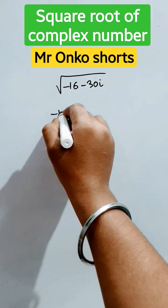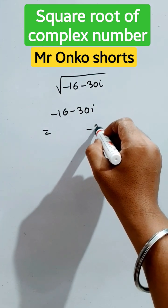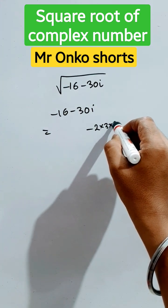So first convert this into a whole square pattern. So 30i, it is 2 into 3 into 5 into i.